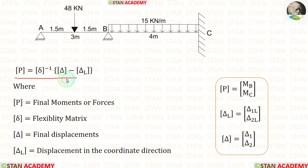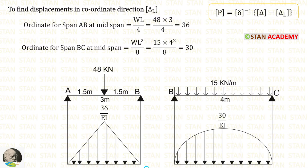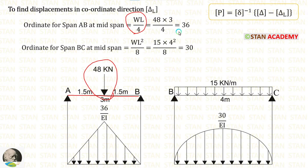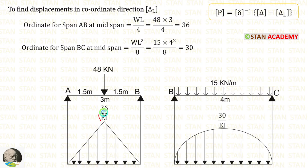Now let us calculate the delta L matrix. We know that delta L matrix contains the displacements in the coordinate direction. In this analysis, we have released the moments, so the displacements are the slopes. We can calculate the slope values using the conjugate beams. In beam AB, there is a point load of 48 kN at the center; the formula for maximum bending moment is WL/4. In beam BC, there is a UDL of 15 kN/m for the full span; the formula for maximum bending moment is WL²/8. In the conjugate beam, we divide the moment by EI. Let us name the conjugate beams A'B' and B'C'.